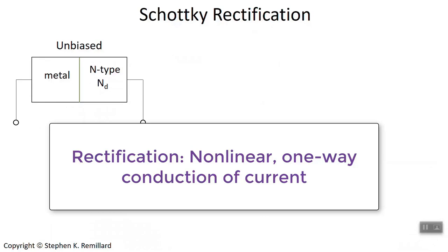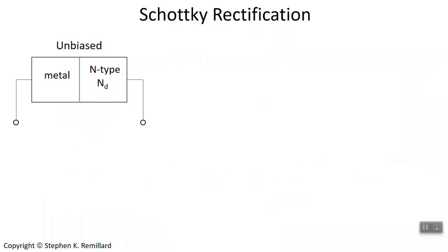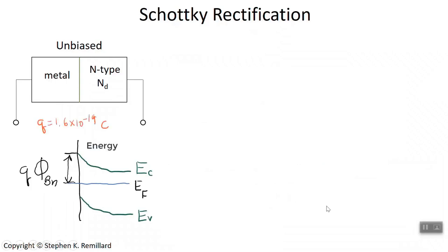I'll start by talking about the energy level diagram for a metal, n-type semiconductor junction, unbiased — that is, in thermal equilibrium. Without bias, the Fermi energy is just a horizontal line all the way across the junction from the metal side through the semiconductor side. There is no quasi-Fermi energy level, which we'll get to next when we bias the junction.